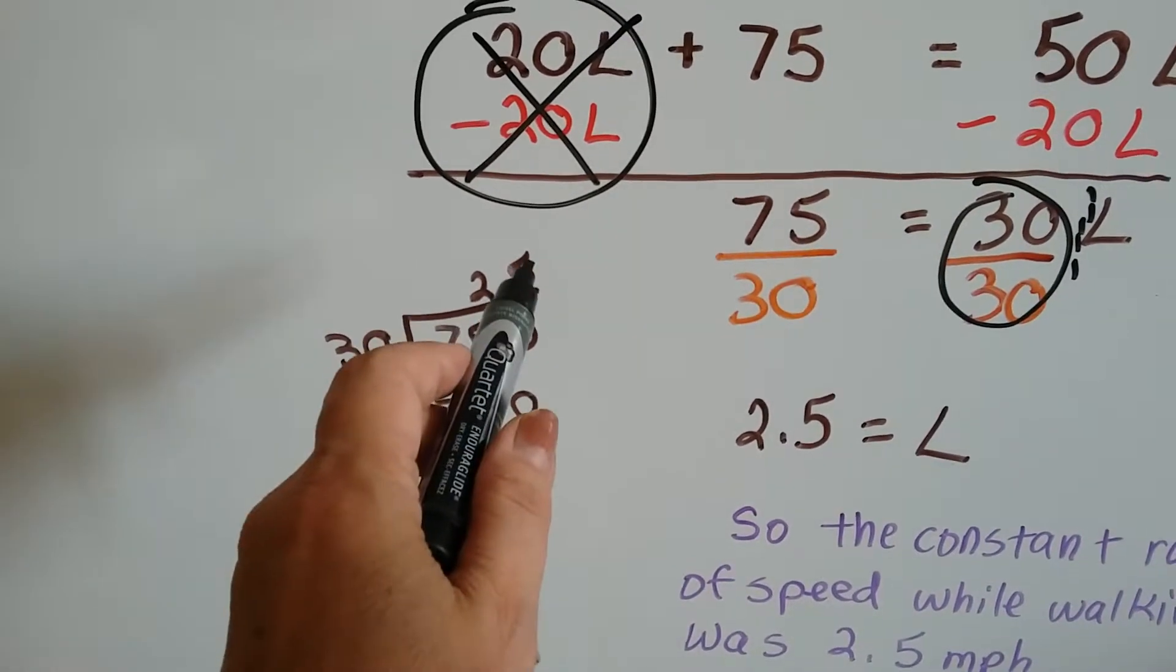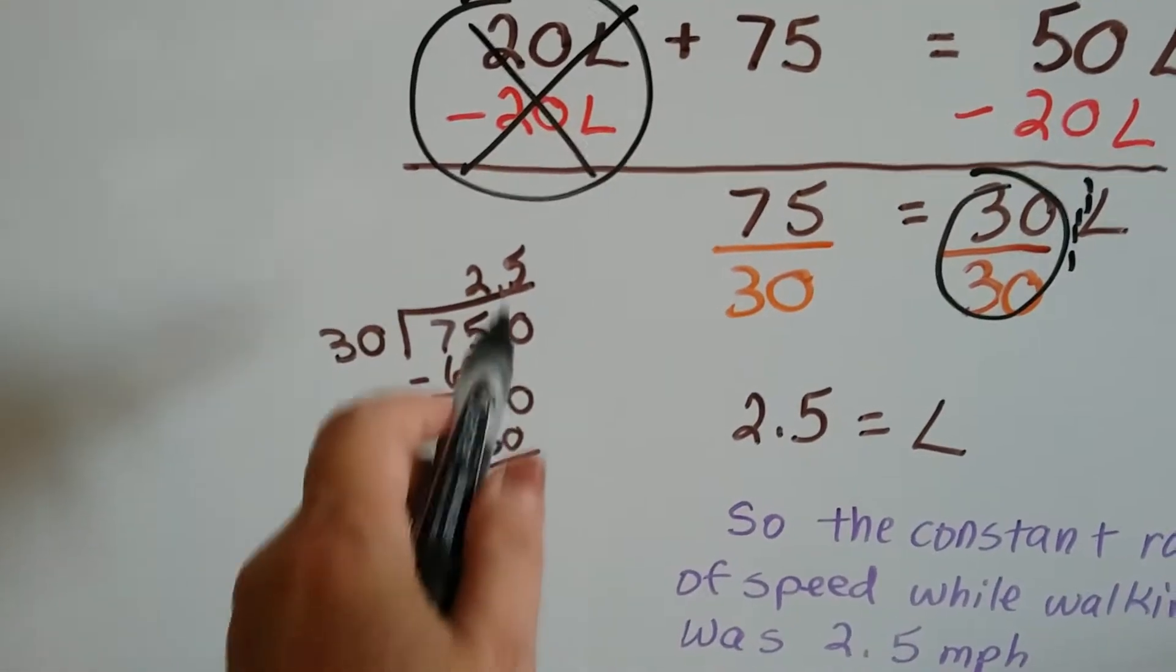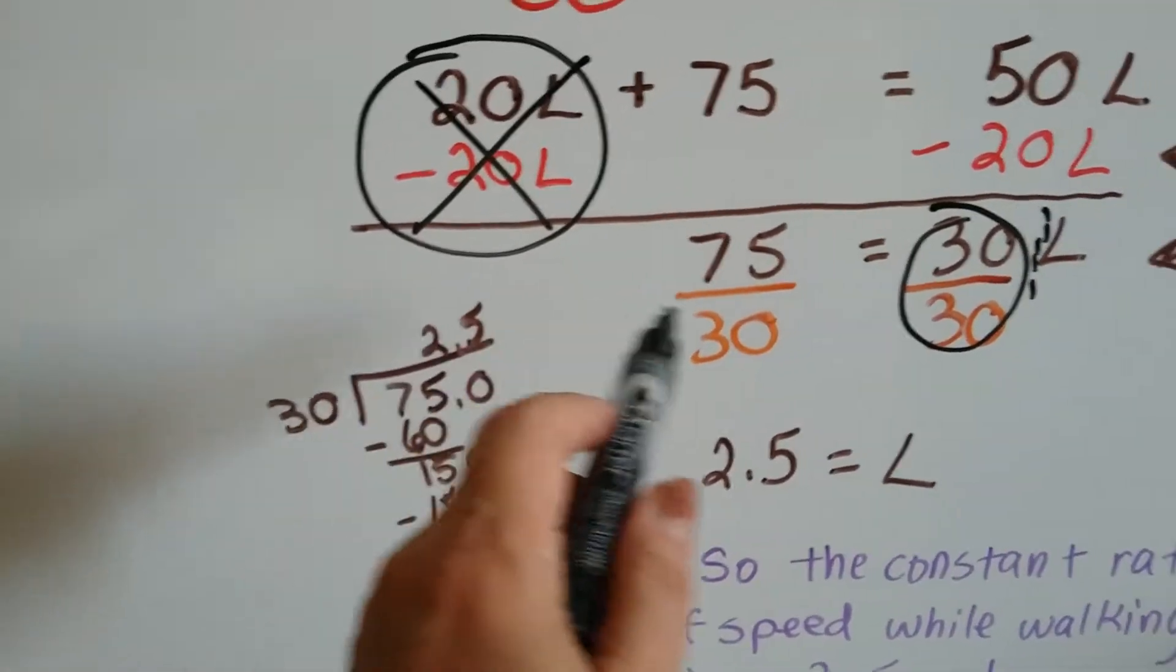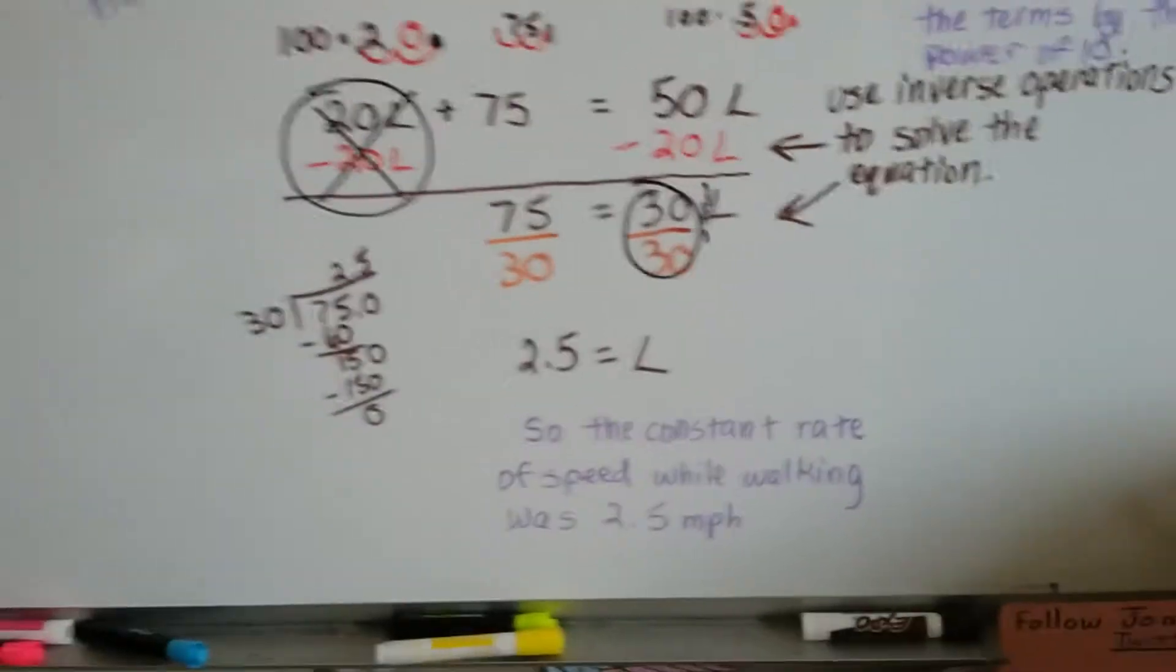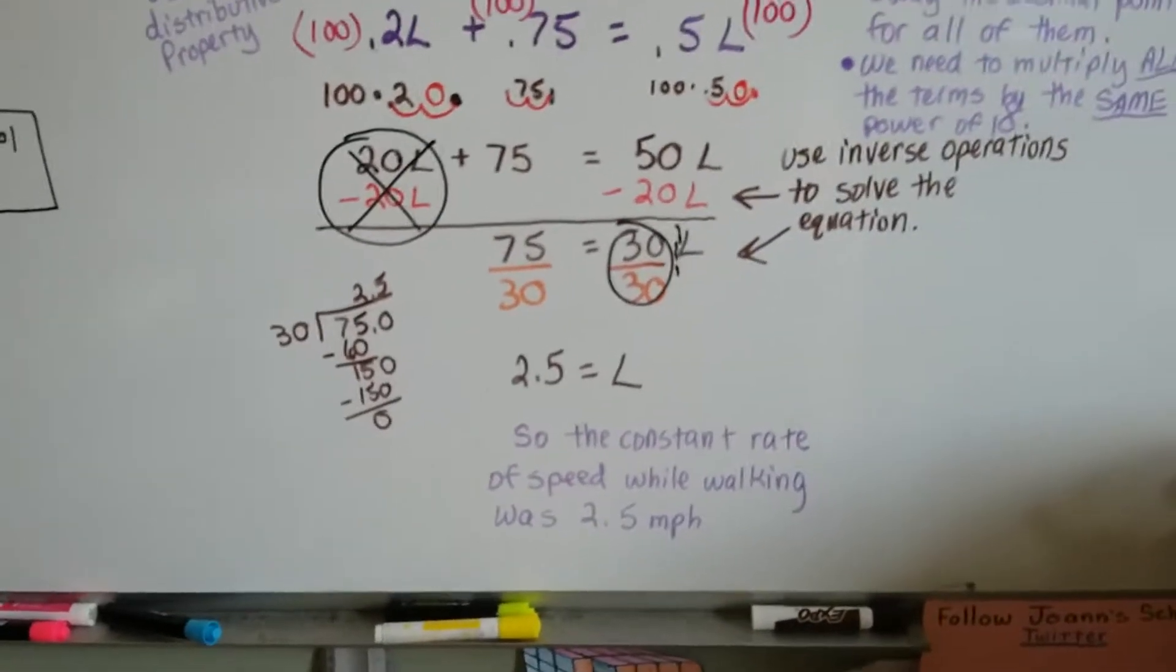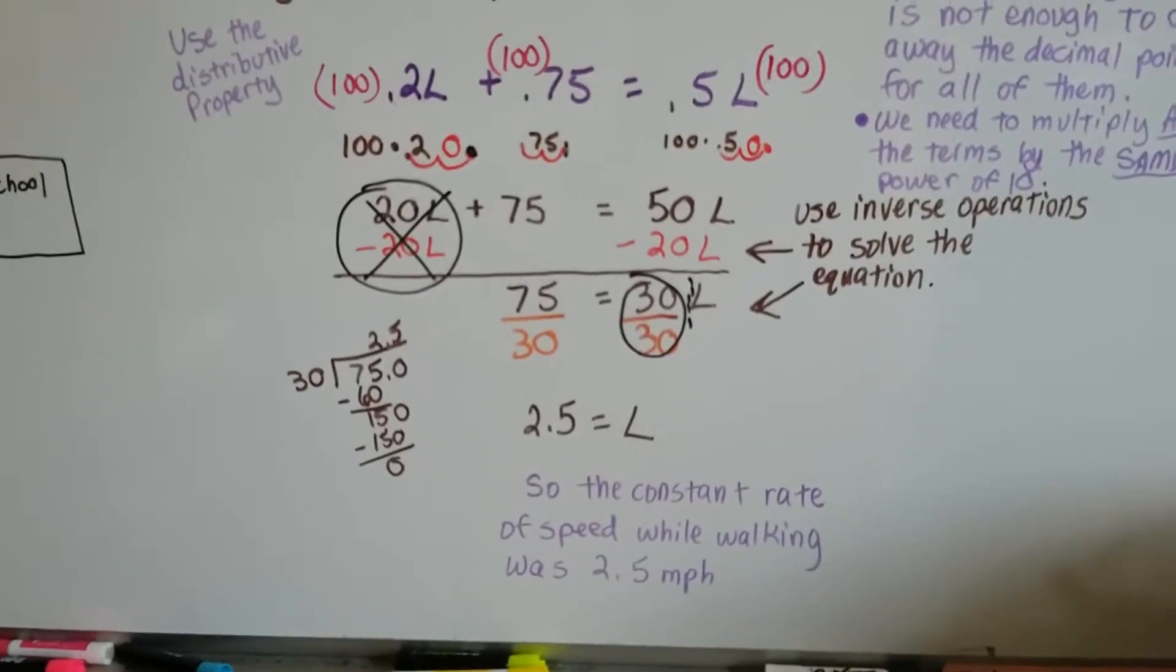And 30 goes into 150 five times. I did my subtraction and it came out even, so I know that the answer is 2.5, and that's what equals L. So the constant rate of speed while walking was 2.5 miles per hour.